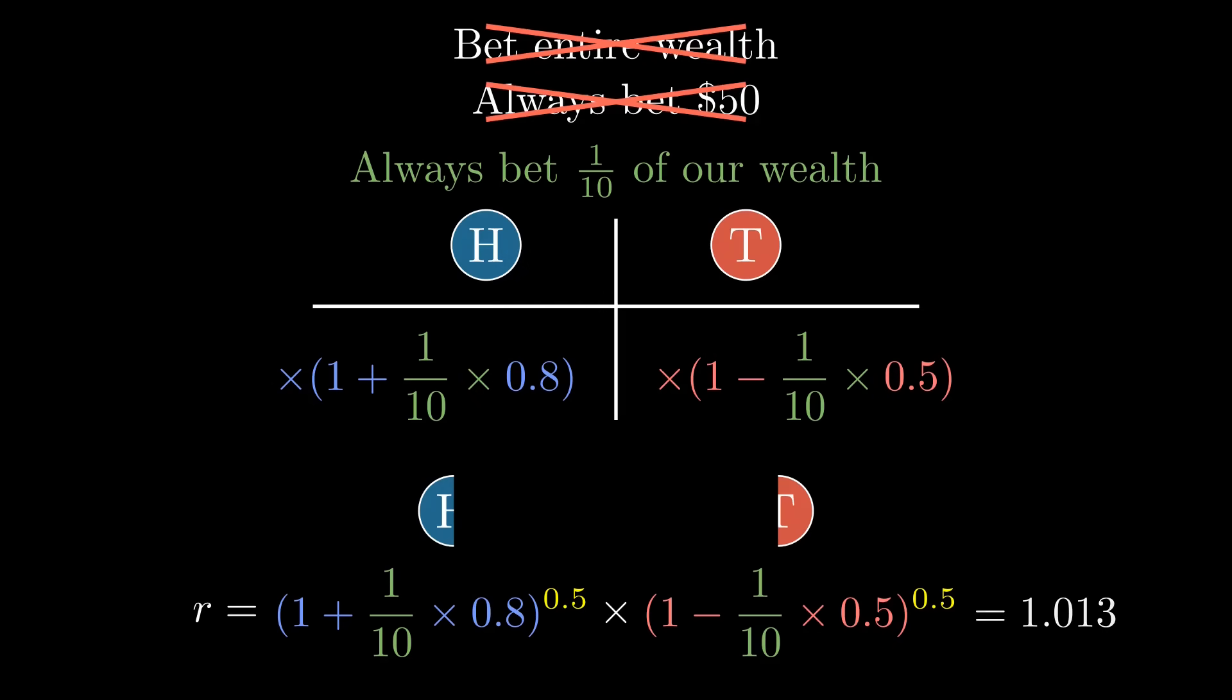But is betting 1/10th of our wealth optimal? Why not 1/15th or 1/5th? To answer this question, we can start by generalizing the equation.